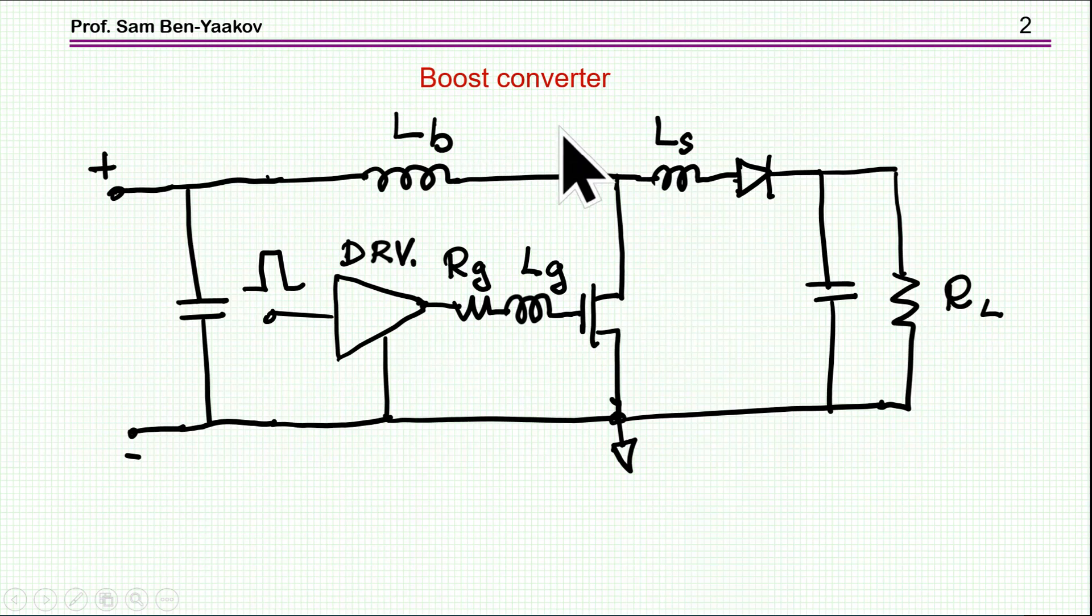So here's the case. We are talking about the boost converter I'm showing here. This is the main inductor, the diode, output section. This is the driver, the gate driver. And I'm also showing some stray inductances in the gate loop, gate drive loop, and here at the diode section.